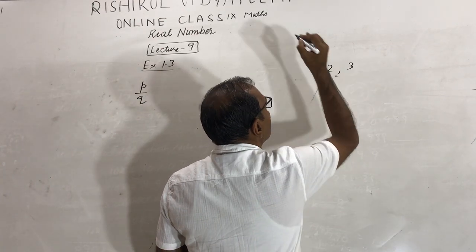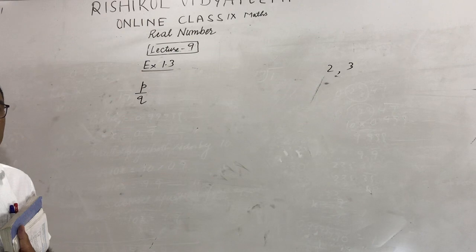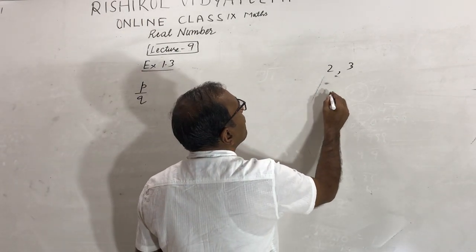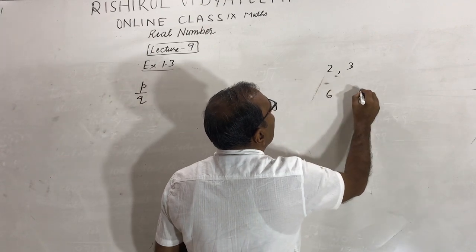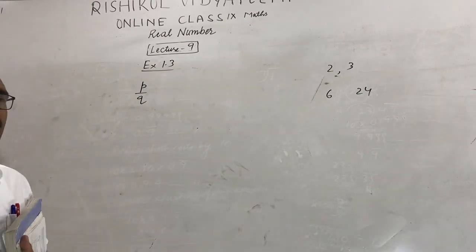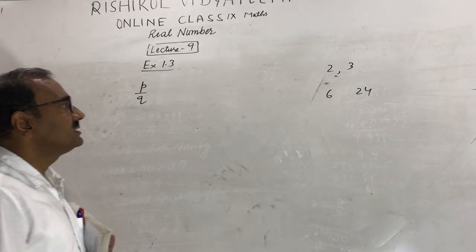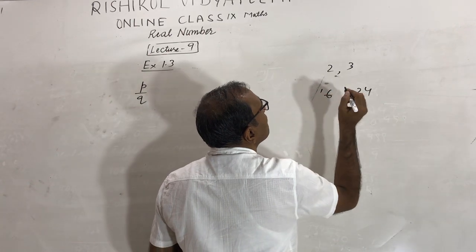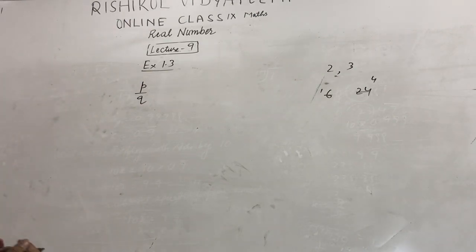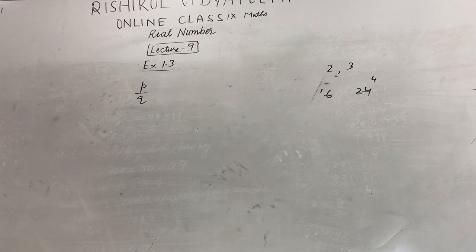After simplifying 6/24 by dividing by 6, you get 1/4, and 1 and 4 are co-prime. So when you solve question number 1 and observe the results, what property of q is satisfied? If the decimal is terminating, then the factors of q have only powers of 2 or 5 or both.